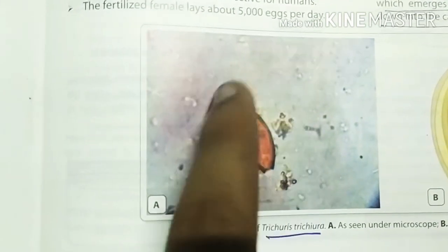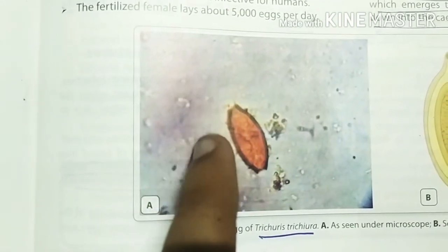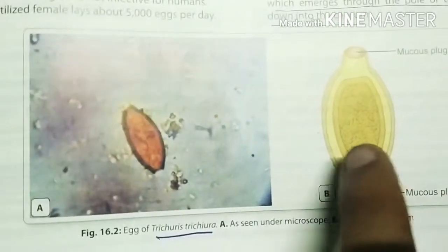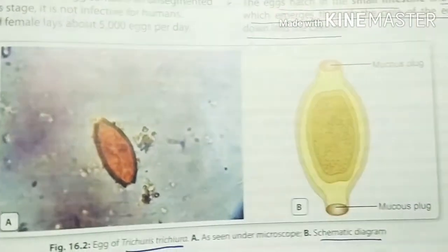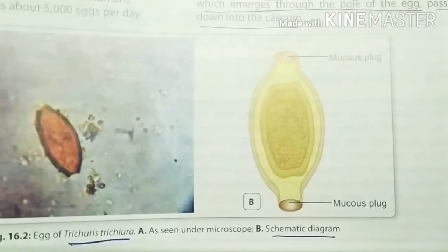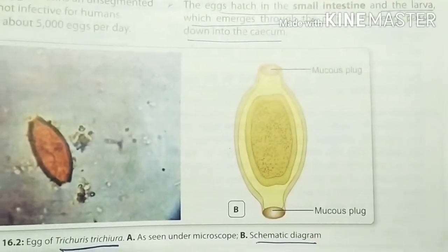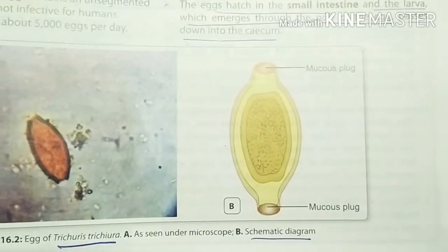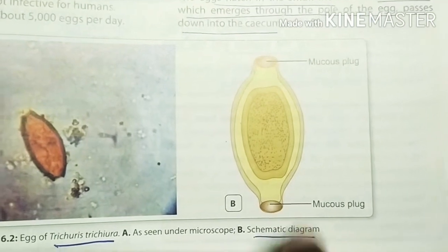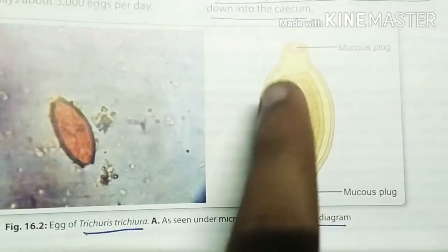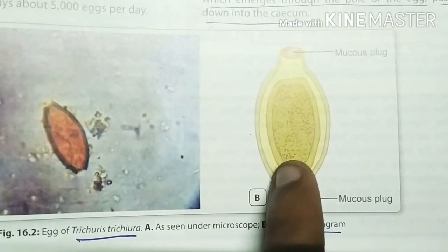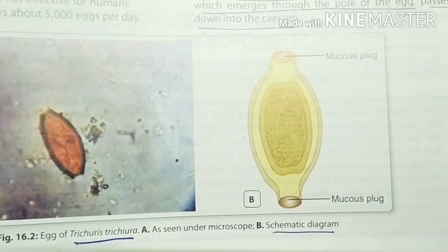And it is barrel shaped. There are three layers — see here the schematic diagram. The three layers: the outer, middle, and inner layer.